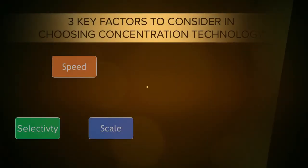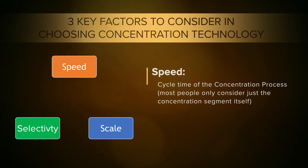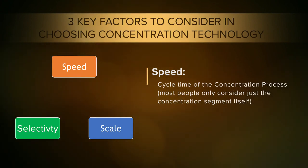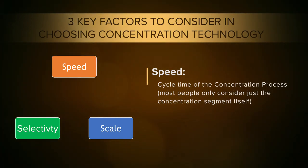Now we want to look at those factors and make a decision. There are three things to look at, and I use the S's: speed, scale, and selectivity.